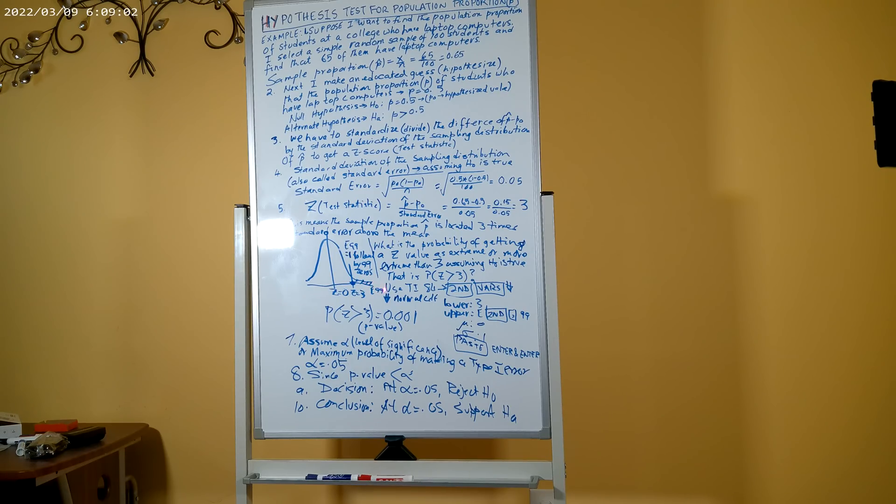So we can use the TI calculator, TI-84 calculator. We press the second key and then the first key, and then we scroll down to normalcdf, which is number 2. When we do that, we get this screen. The lower value means the area where the probability of z greater than 3—we want to find the area starting from z = 3 and on the right of z = 3, stretching to a very large number. So my lower boundary is 3 of this shaded area.